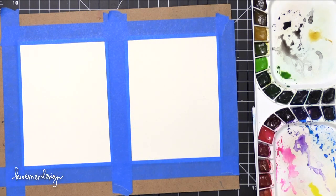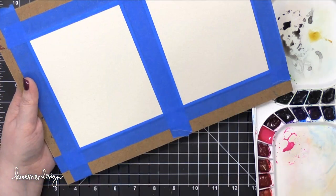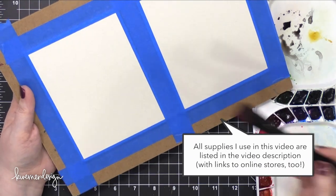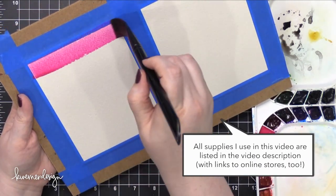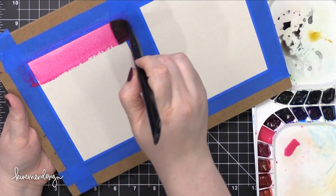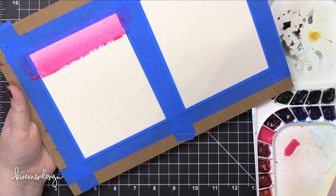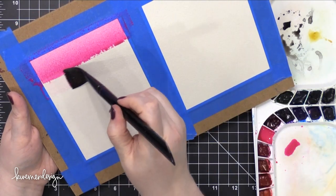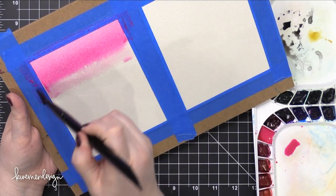So I've started out by taping down my watercolor paper to a hard surface. To do these washes, it really is helpful to have them taped down so that you can pick the board up and move it around and kind of help the water go in the direction where you need it to go. So I'm starting out with a pretty strong bright pink color and I've put that straight onto dry paper.